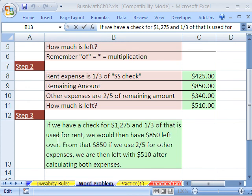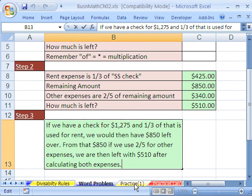From that 850, if we use two-fifths for other expenses, we are then left with $510 after calculating both expenses. Don't forget to come back and write your answers in word. Not only might it be required of your particular project, but it certainly helps you, in your mind, summarize what you just did.